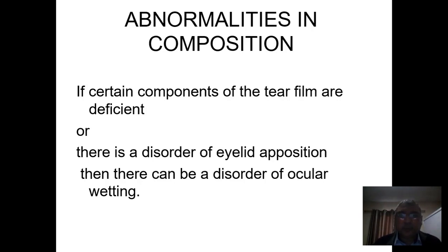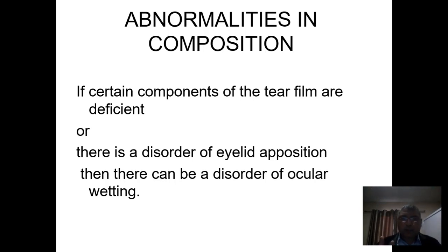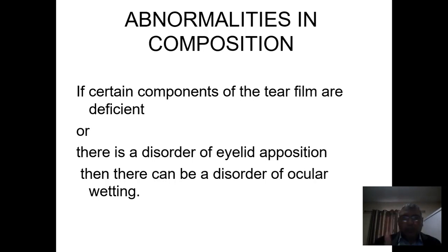Abnormalities in the tear composition: if certain components of the tear film are deficient, or there is any disorder of the eyelid opposition to the globe, there will be a disorder of ocular wetting. The tear film has three components: the mucin component adherent to the epithelium of the cornea, the aqueous component which is the main part of the tear film, and the lipid component which covers the surface of the tear film. These three components are very important for the integrity of the tear film, and eyelid movement regularly distributes the tear film in front of the cornea.